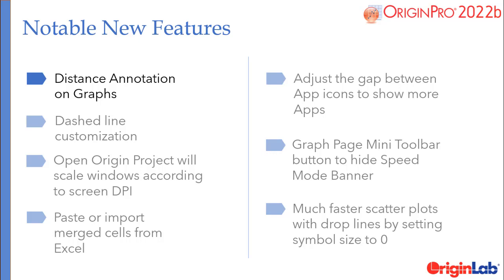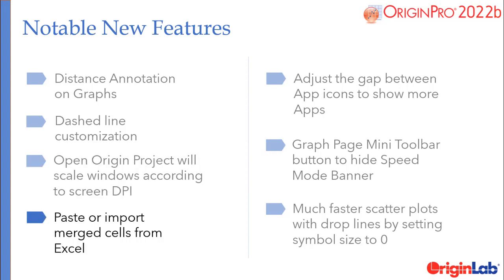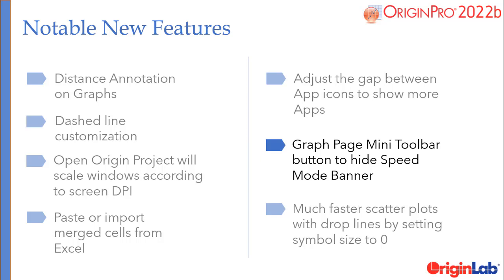Additional features include distance annotation on graphs, dash to line customization, open Origin project while scaling windows according to screen DPI, paste or import merged cells from Excel, adjust the gap between app icons to show more apps, a graph page mini toolbar button to hide speed mode banner, and much faster scatter plots with drop lines by setting symbol size to 0.